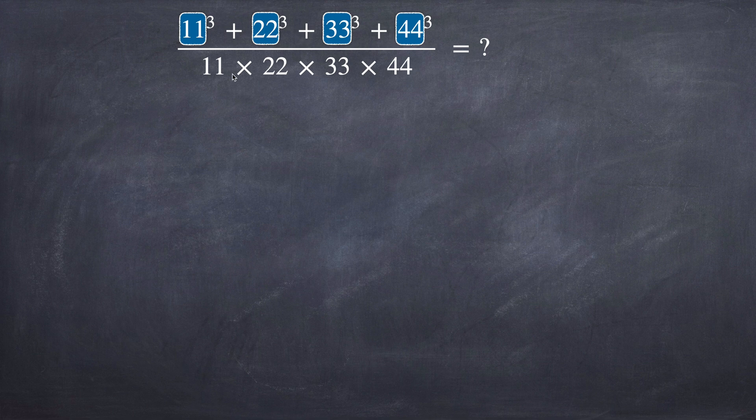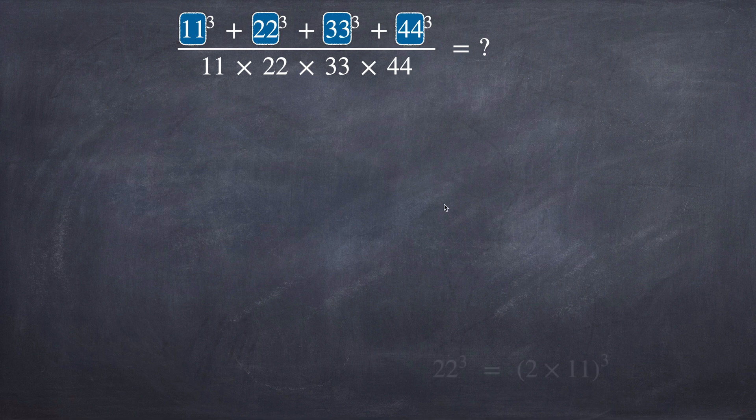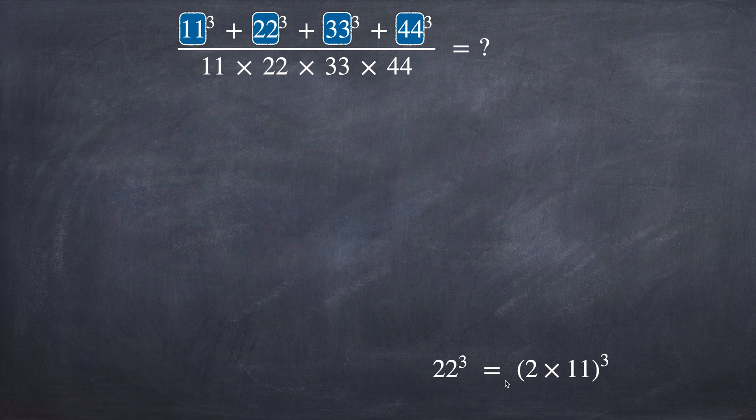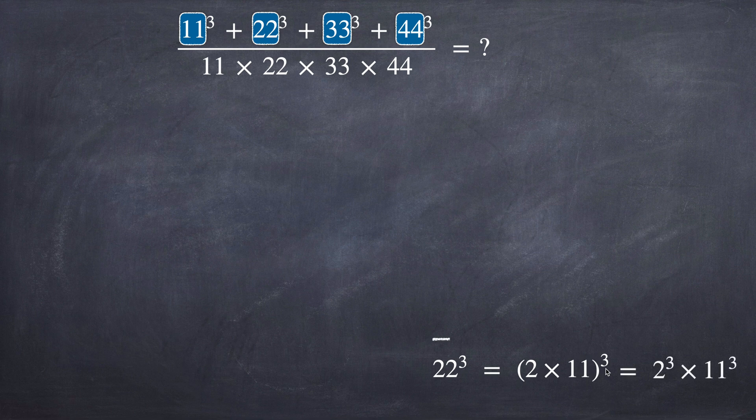Pay attention first to these numbers 11, 22, 33 and 44. They are all multiples of 11. So instead of 22 to the power of 3, let's write it as 2 times 11 to the power of 3, and that we know is equal to 2 to the power of 3 times 11 to the power of 3.